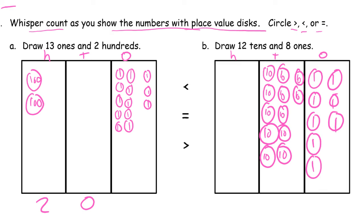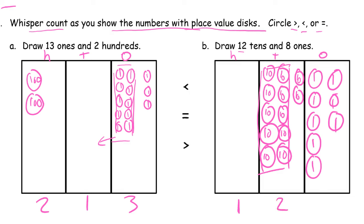So that means these ten ones are going to make a ten, so you're going to have a ten and three ones. And these twelve tens — that's going to make a hundred, because ten tens make a hundred. So that'll be a hundred, and you'll have two tens left, and then you'll still have the eight ones. So which number is greater or smaller? 213 — is it less than, equal to, or greater than 128? It's greater than 128.